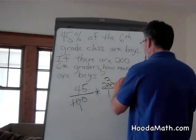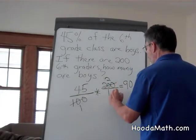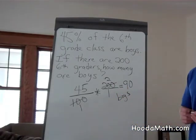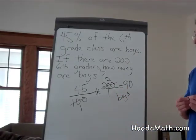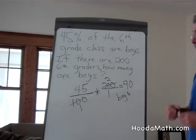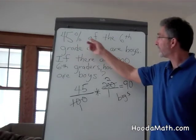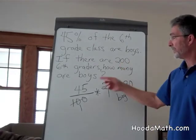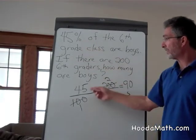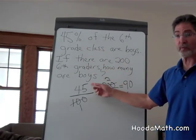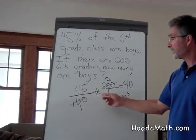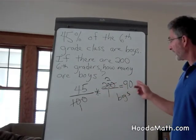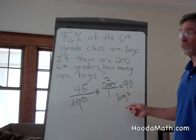We find out there are 90 boys in the 6th grade class. Once again, 45% of a quantity means 45% is the ratio — 45 out of 100 — times 200 students, and you get 90 boys.